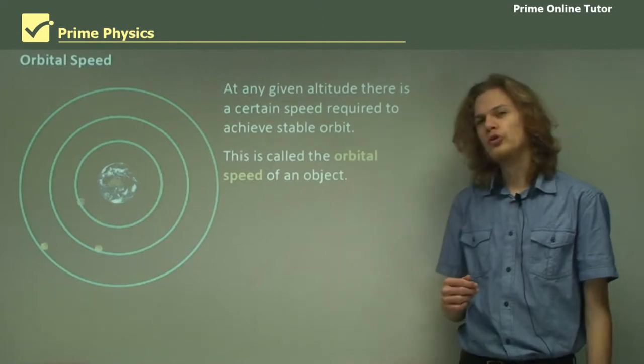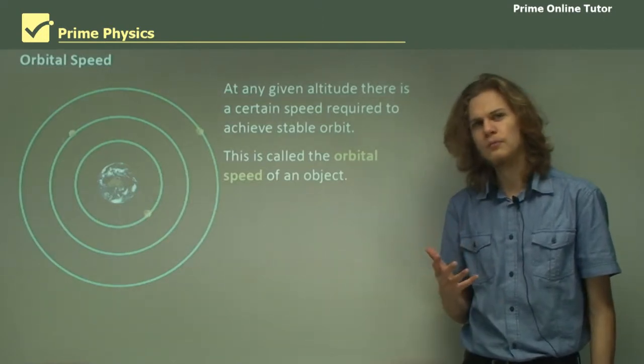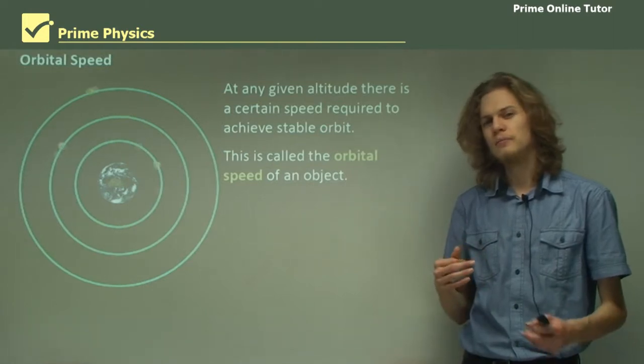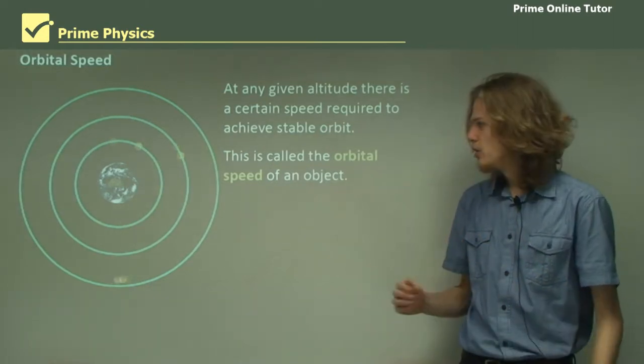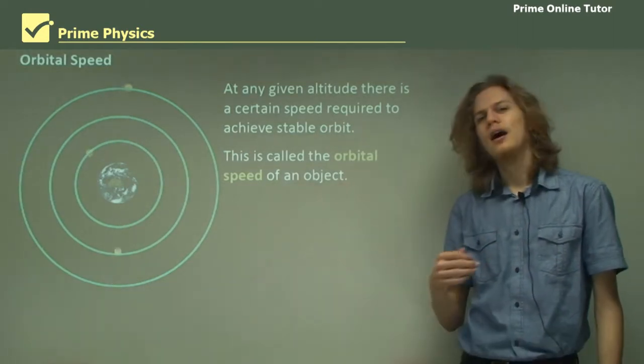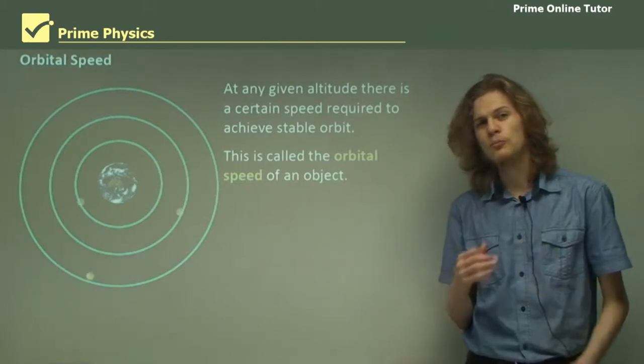This is called the orbital speed or the orbital velocity of the object. Remember speed is simply a measure of distance over time whereas velocity is a vector so it points in a direction.